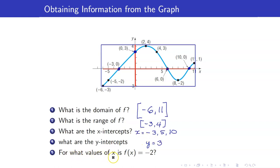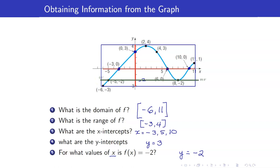Lastly, for what values of x is f(x) equal to negative 2? You want the x-values where the y-coordinate equals negative 2. Drawing a horizontal line at y equals negative 2, you can see the points on the graph where this occurs. Those are x equals negative 5 and x equals 8.